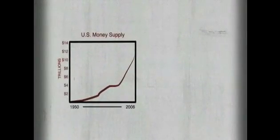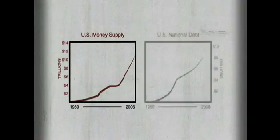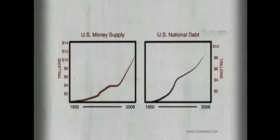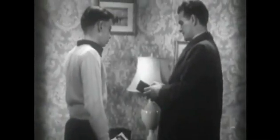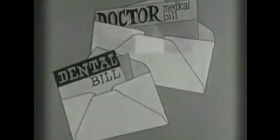Here is a chart of the US money supply from 1950 to 2006. Here is a chart of the US national debt for the same period. How interesting it is that the trends are virtually the same. For the more money there is, the more debt there is. The more debt there is, the more money there is. To put it a different way, every single dollar in your wallet is owed to somebody by somebody. For the only way money can come into existence is from loans. Therefore, if everyone in the country were able to pay off all debts, including the government, there would not be one dollar in circulation.